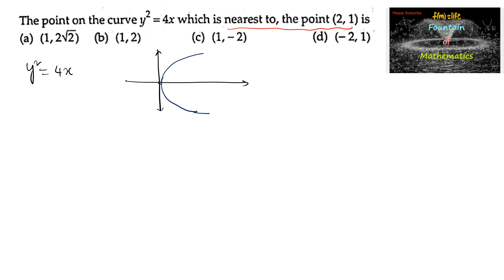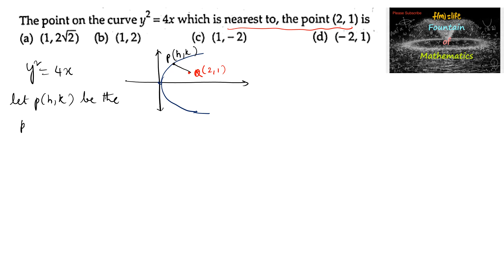Here is the point (2, 1) — let this point be Q. Let us consider the required point on the curve which is nearest to Q, say h comma k. So let point P(h, k) be the point on the curve.